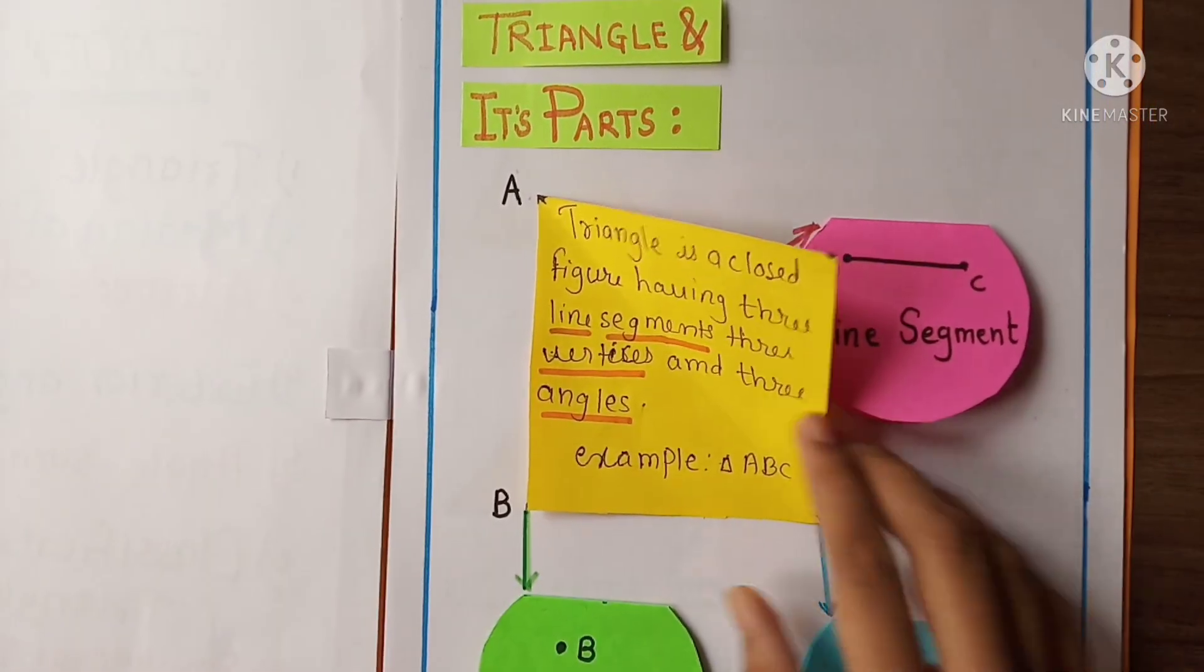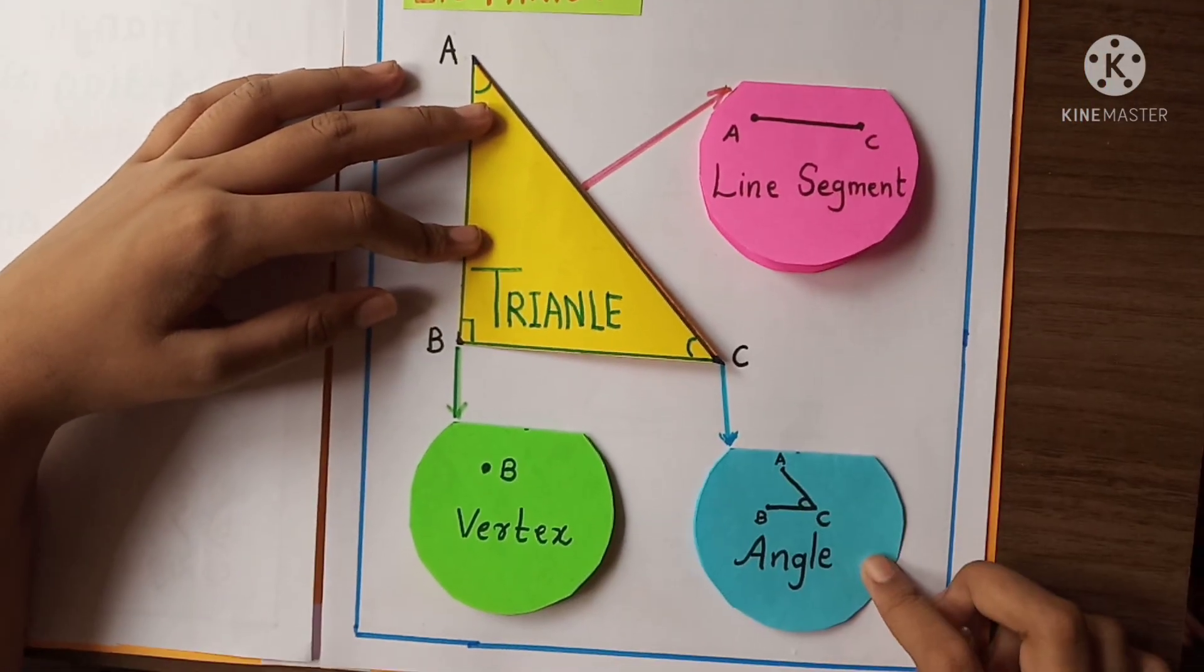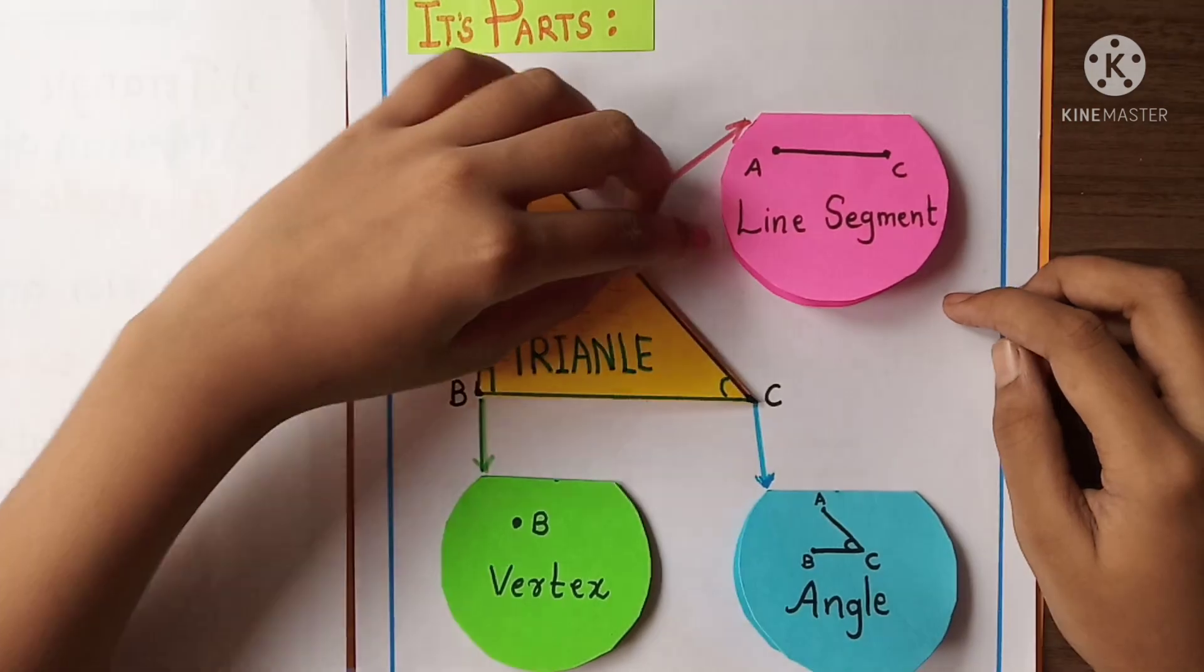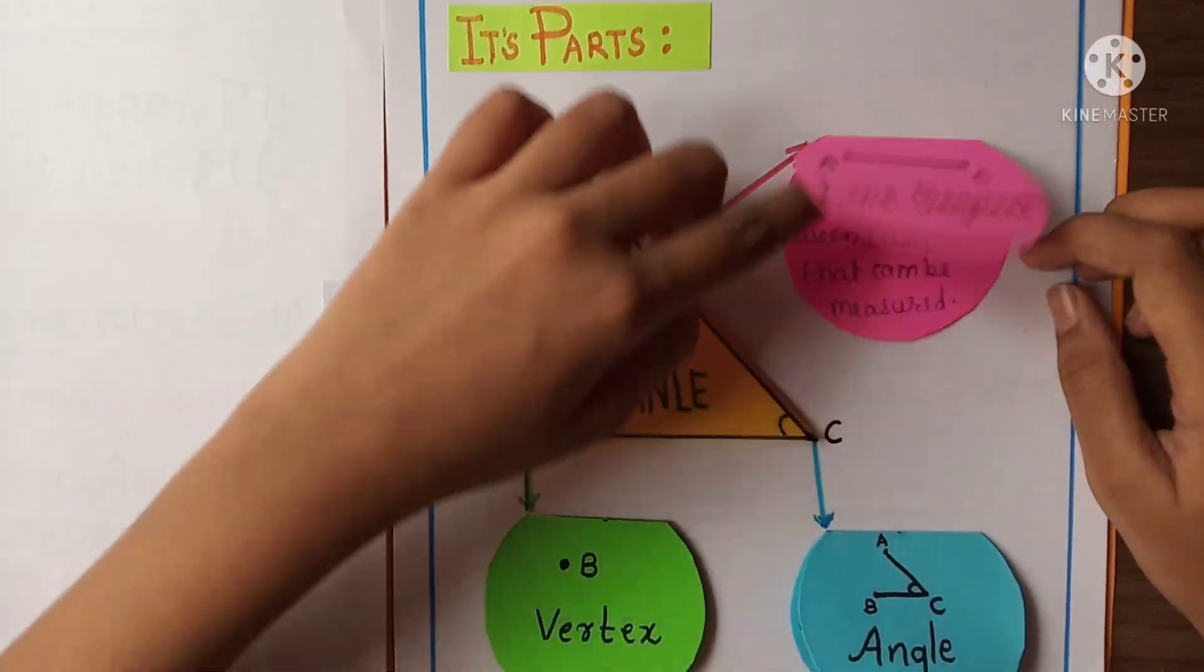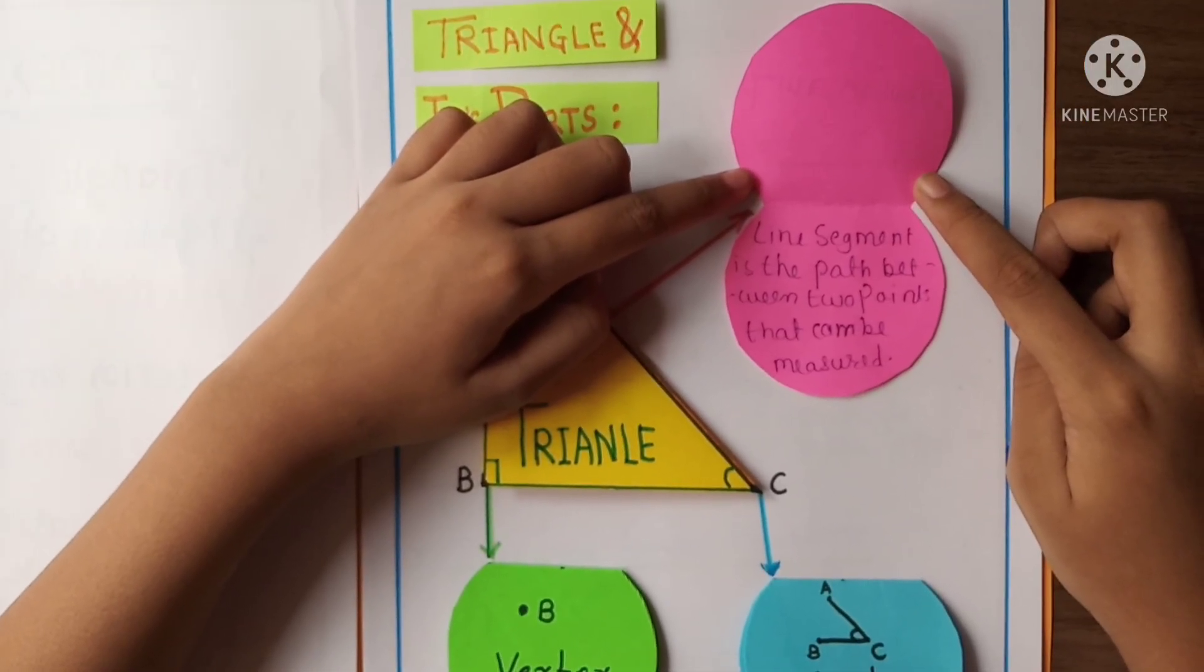Now we will see parts of a triangle by which triangle is made. First one is line segment, second one is angle and third one is vertex. Let's see the definition of line segment. Here is the line segment AC. Line segment is the part between two points that can be measured.